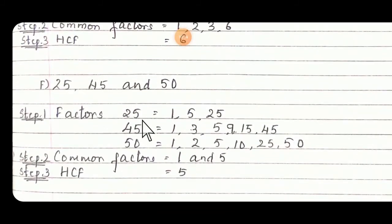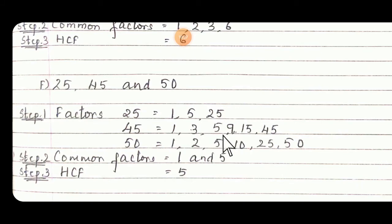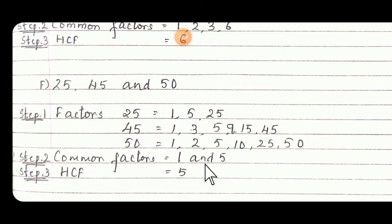Similarly for F: 25, 45, and 50. Factors of 25: 1, 5, and 25. Factors of 45 — divide and see, you will get: 1, 3, 5, 9, and 45. Then for 50 you have to find the factors. Compare these factors — you will get the common factors as 1 and 5. So out of this which is the highest one? That is 5. So write down 5 as the answer.